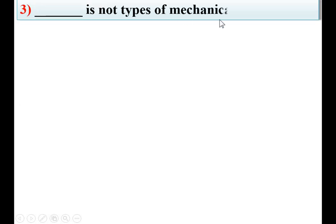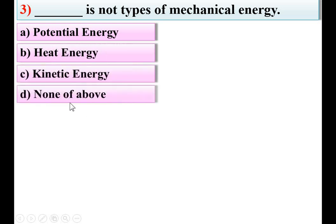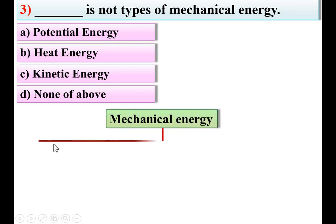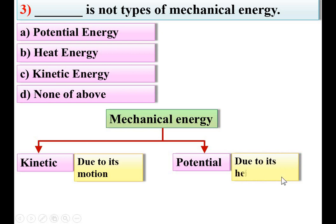Next: which is NOT a type of mechanical energy? Options: potential energy, heat energy, kinetic energy, none of the above. Mechanical energy is of two types: kinetic energy, due to motion, and potential energy, due to height. Heat energy is not mechanical energy. So B is the right answer.